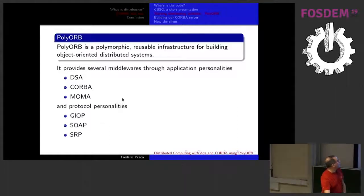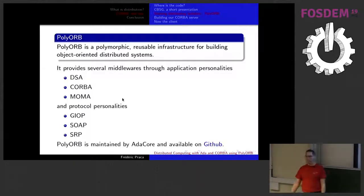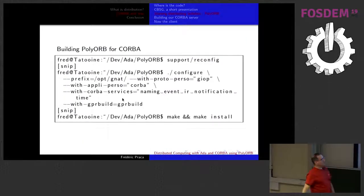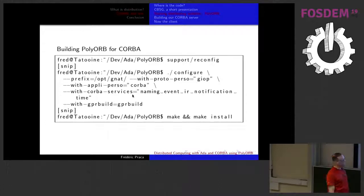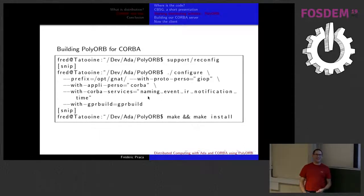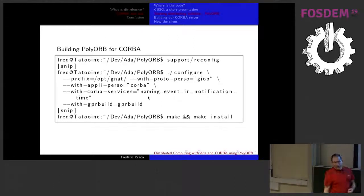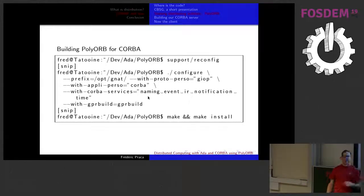The standard used is GIOP with IIOP. PolyOrb is maintained by AdaCore and available on GitHub. Compiling PolyOrb is not that easy. When you configure PolyOrb, you specify which protocol and which application personality to use. For CORBA there is something else called CORBA services. The standard defines several existing distributed objects: Naming, Event, IR, Notification, and Time. In the GitHub repository you will have the standard code for the distributed Corporate Bullshit Generator and one using Naming — which is, in fact, a kind of DNS for objects.